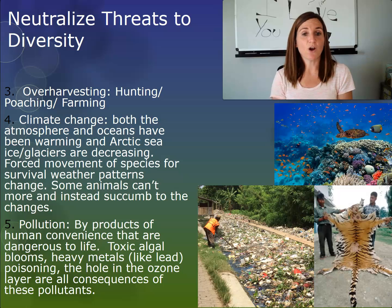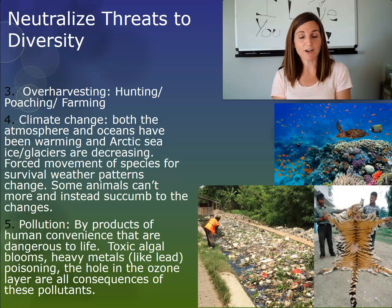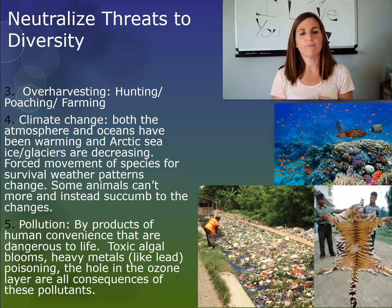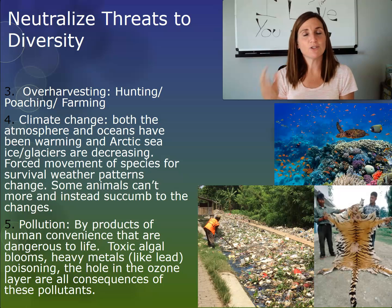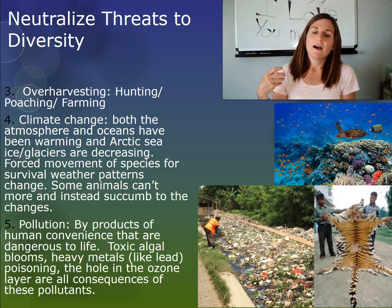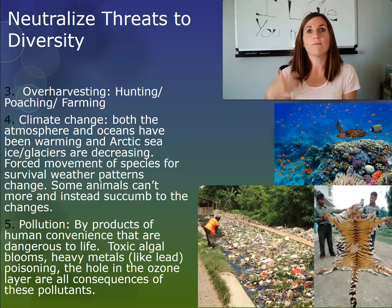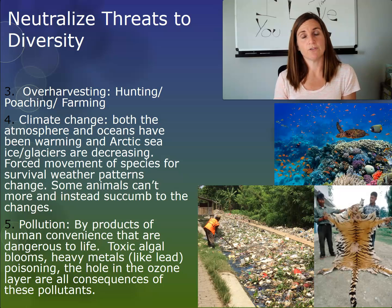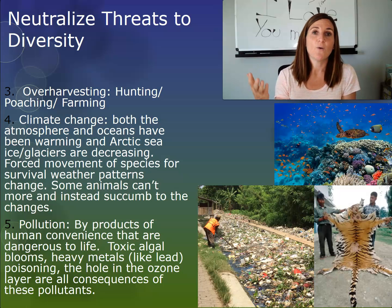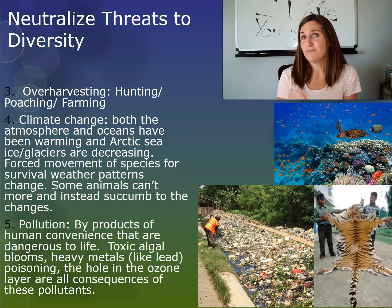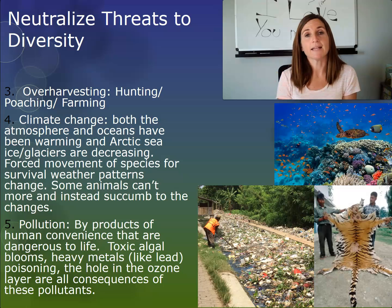Another threat that humans pose is over-harvesting through hunting, poaching, and farming. We already talked about sea otters as an example of over-harvesting from poaching. Tigers are another example — a tiger pelt is a prized possession, but there are so few tigers left in the world we need to keep them alive. Over-harvesting also includes monoculture farming, where you farm the same crop over and over again, which strips the soil of nutrients and causes serious problems for the environment. But farming provides food to feed humans, so these are not easily solved problems.